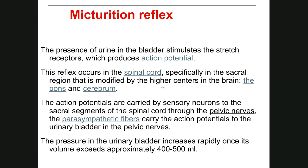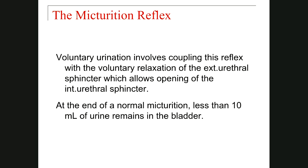The action potential travels to the sacral region of the spinal cord, then by ascending fibers to higher centers of the brain including the pons and cerebral cortex. The response comes back down via parasympathetic fibers through the pelvic nerves to the urinary bladder, creating pressure that rapidly empties the bladder.